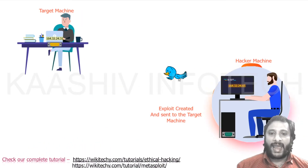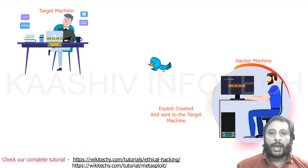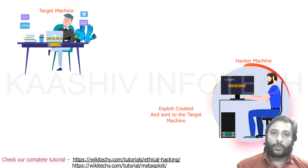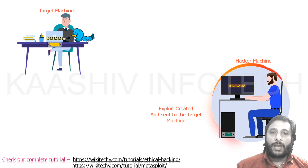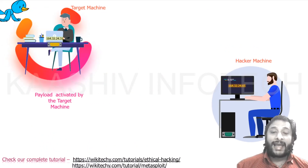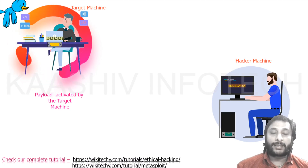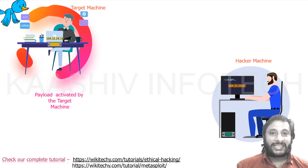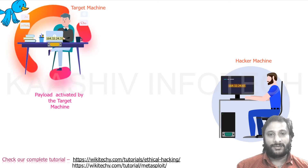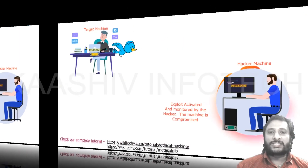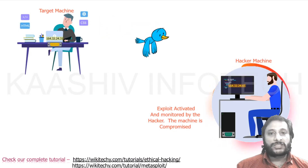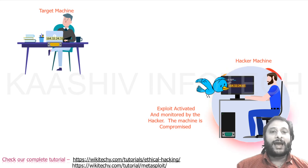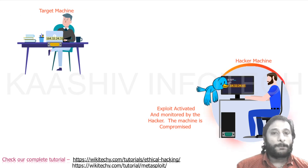Here is the process: an exploit is created and sent to the target machine. It reaches the target. Once the target clicks on it or performs an expected action, the payload is activated by the target machine. Once the payload is activated, the exploit gets activated automatically. We are able to get the response back, hack the machine, and the machine is compromised.